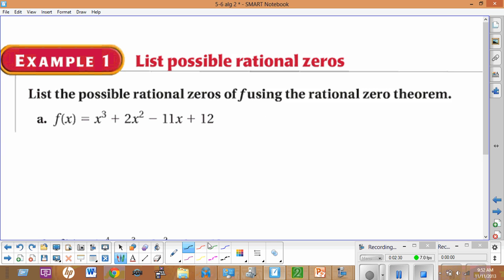The first thing we want to list are our possible rational zeros. We're going to call our constant term the p term, and our leading coefficient is our q term. So what we want to do is list all the possible factors of both of these.